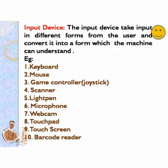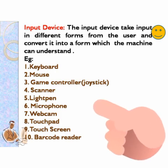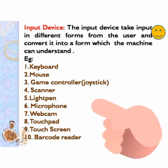First we will discuss about input devices. The input device takes input in different forms from the user and converts it into a form which the machine can understand. So these are all the examples of input devices. We will start from keyboard, then mouse, then all.